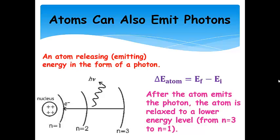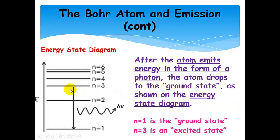Atoms can also emit photons — this is what we saw with the emission spectra. Here's the nucleus, n equals 1 orbit, n equals 2, n equals 3, and here's an atom emitting energy in the form of a photon with a certain frequency. We are going from n equals 3 to n equals 1, so after the atom emits that photon, it's lower in energy. Here's the same transition on an energy state diagram: we started at n equals 3, a photon was emitted, and we ended up in the ground state. The atom has lower energy than it started with.